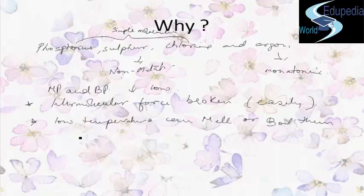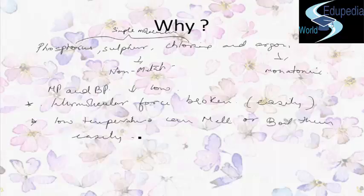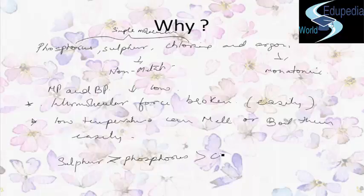Sulphur has the highest melting and boiling point among the four non-metals because it exists as the larger S₈ molecule. The strength of van der Waals forces decreases as the size of the molecule decreases, so the melting and boiling points decrease in the order: sulphur, then phosphorus, then chlorine, then argon.